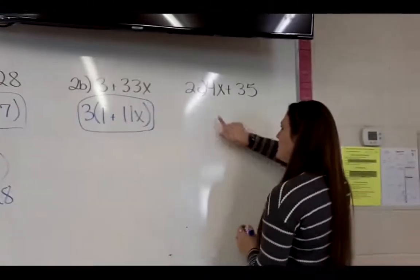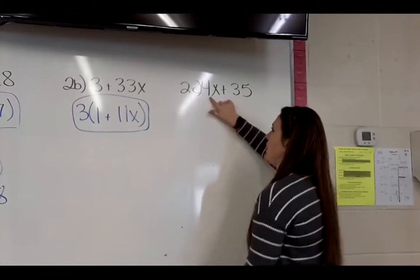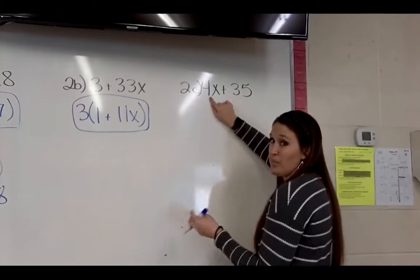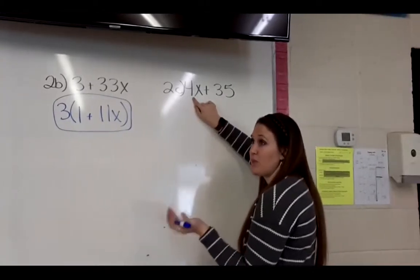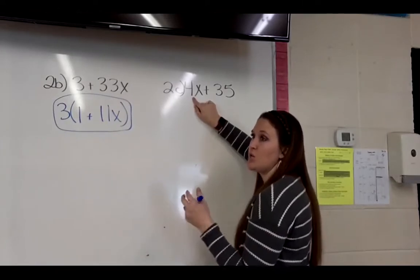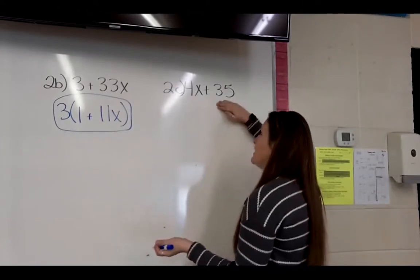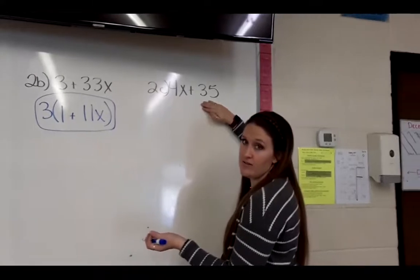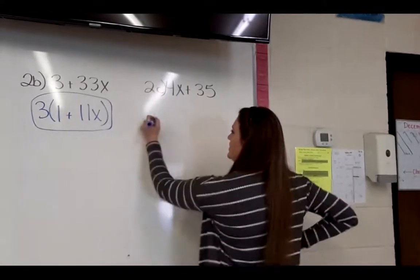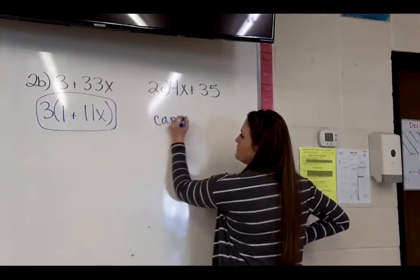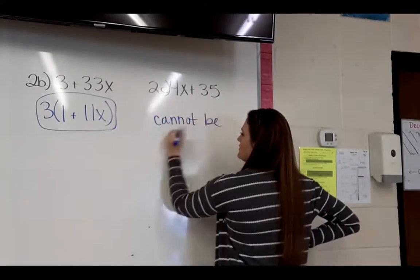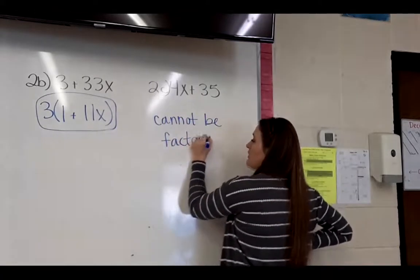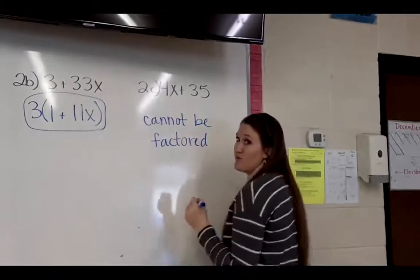Then the last one, 2c, I have 4x plus 35. Okay, 4, that's a pretty small number. The only numbers that go into 4 are 2 times 2 and 1 times 4. So we're looking at 2 or 4. Neither of those go into 35. So the answer on this one is cannot be factored, because you can't. There's no number that we can take out of both of those.